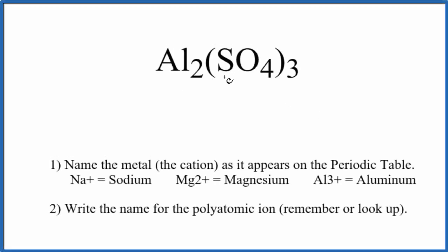To write the name for Al2(SO4)3, the first thing we need to recognize is this SO4 here. This is a polyatomic ion. It's called the sulfate ion.